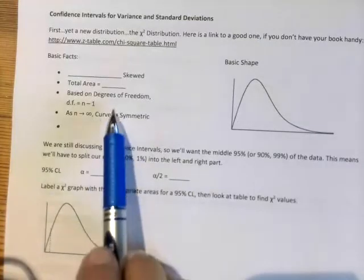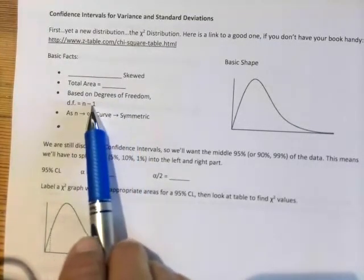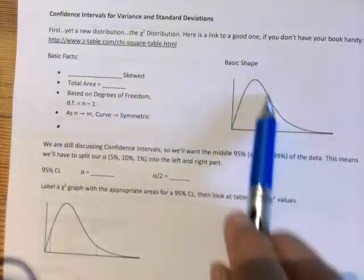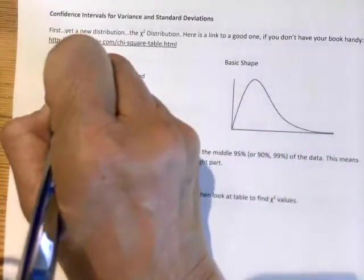It is based on degrees of freedom, n minus 1, where n is your sample size. But again, looking at our shape, we would call this a right-skewed graph.